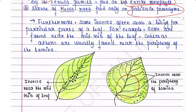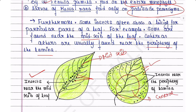Furthermore, some insects show a liking for particular parts of a leaf. Some are found near the midrib of the leaf — we can see in the picture that black dots representing insects are found near the midrib. Others are usually found near the periphery of the lamina, while no insects occupy the central portion of the leaf.